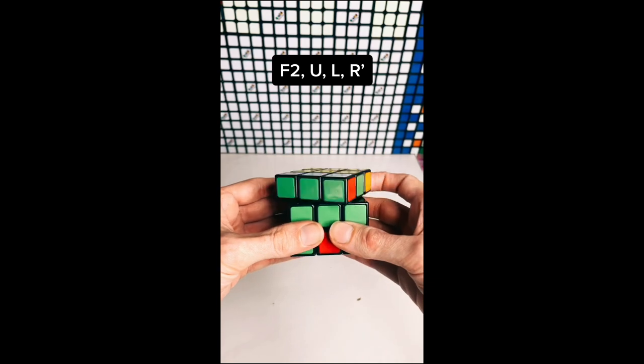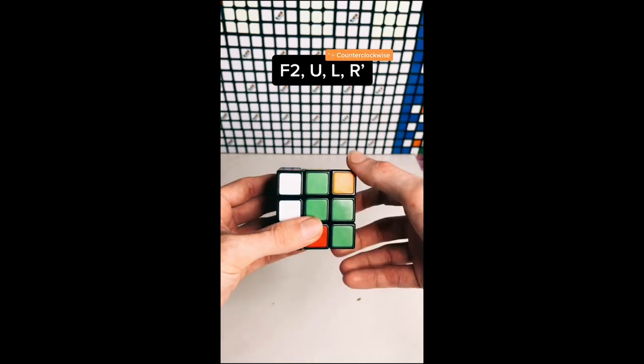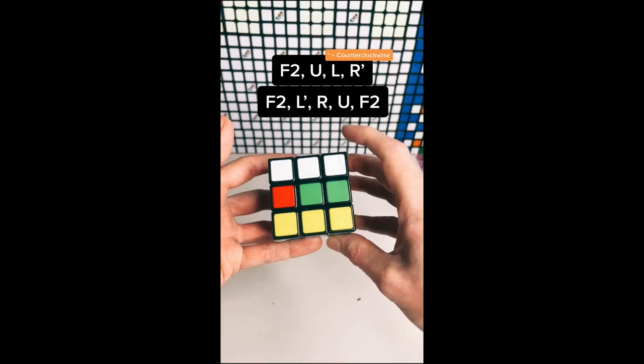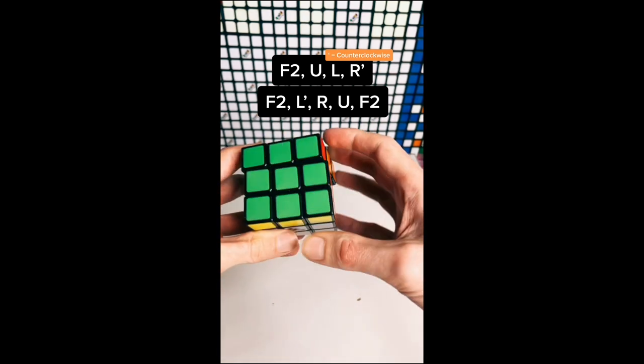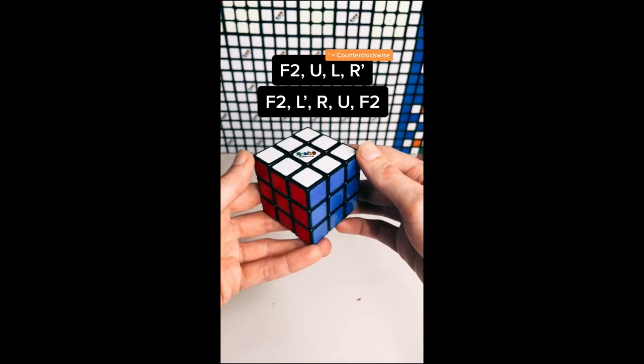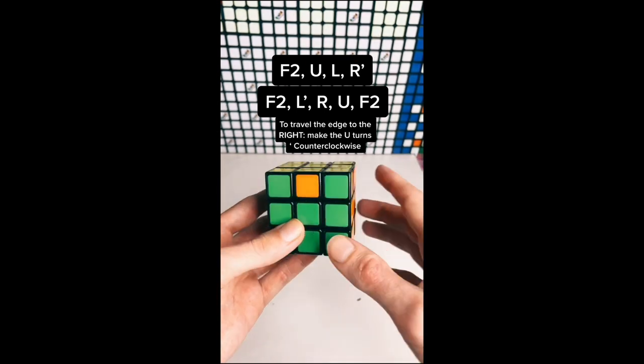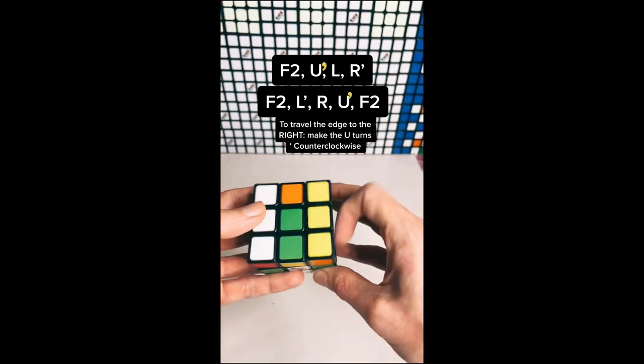F2, U, L, R', F2, L', R, U, F2. To travel the edge to the right, make the U-turns counterclockwise.